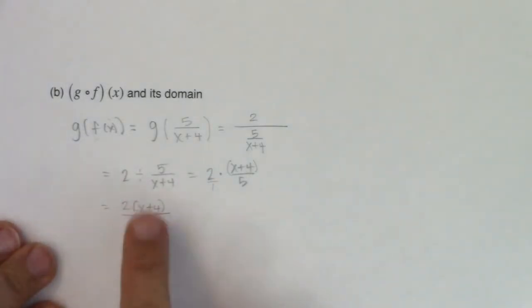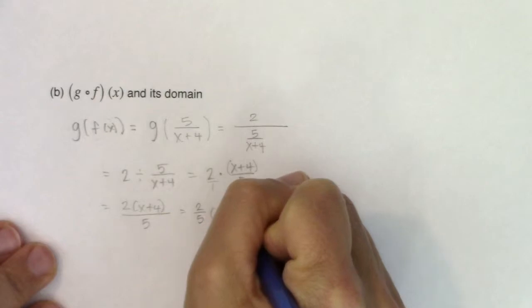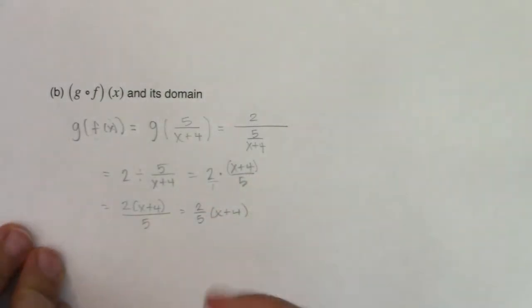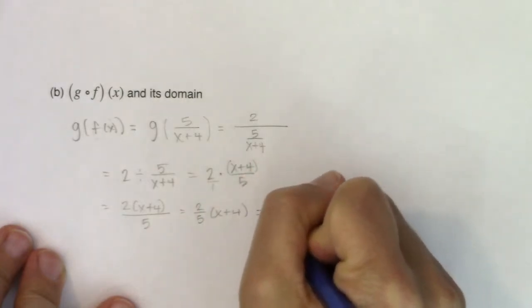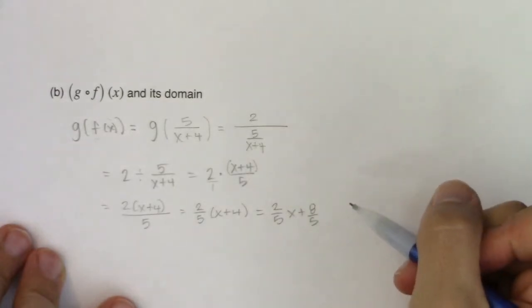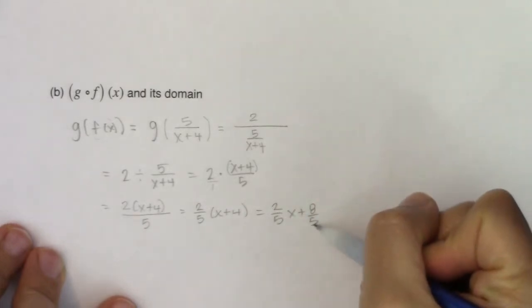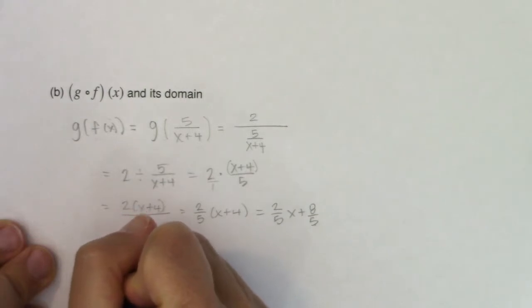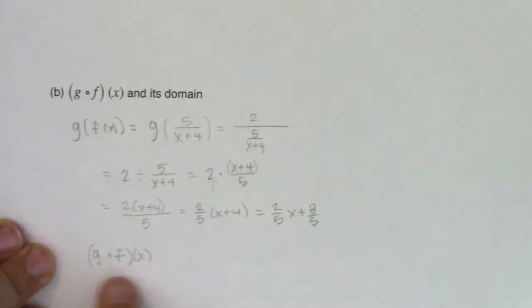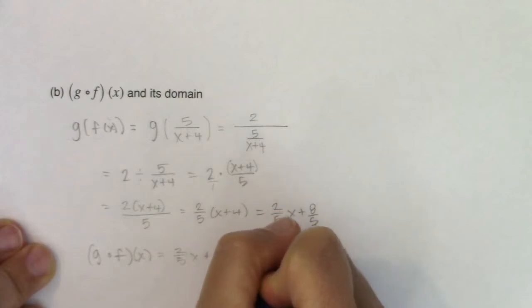But I do want to extend upon this and show you alternate ways of writing this. So you could write this also as 2 fifths times x plus 4. Those are equivalent expressions. You also could have distributed the 2 fifths and wrote this as 2 fifths x plus 8 fifths. So ultimately you see it's just the equation of a line. And that's probably the way I'm going to end it. I'm going to talk about how the slope was 2 fifths and the y intercept was 8 fifths. So we know that g of f of x was equal to 2 fifths x plus 8 fifths.